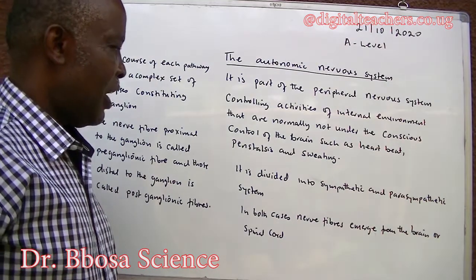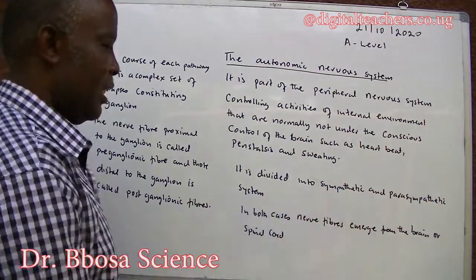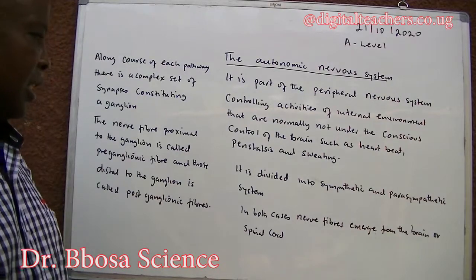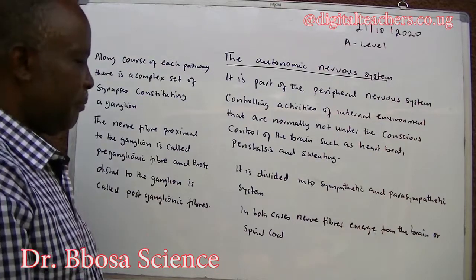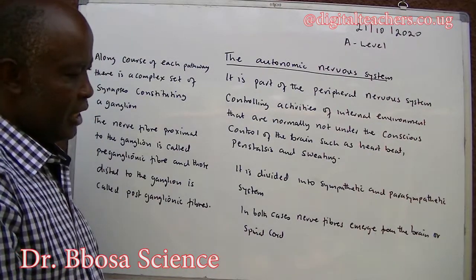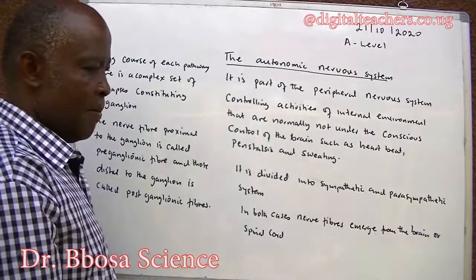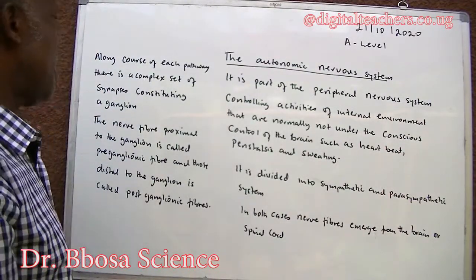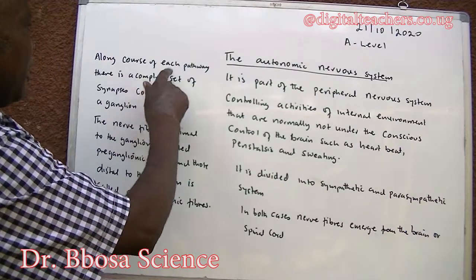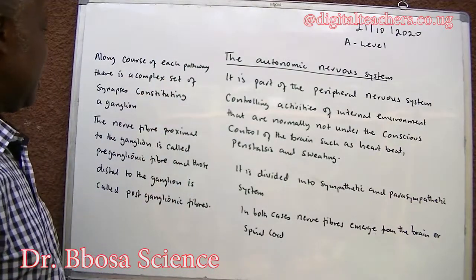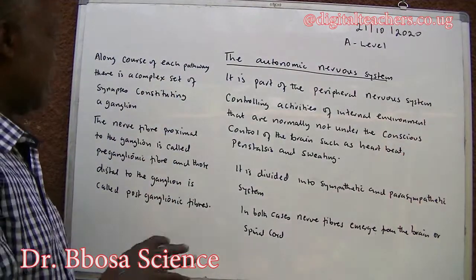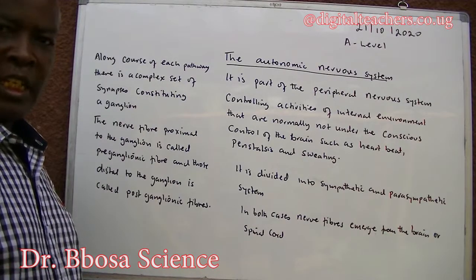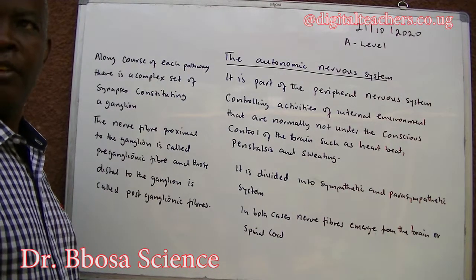It is divided into sympathetic and parasympathetic systems. In both cases, the nerve fibers emerge from the brain or the spinal cord. Along each pathway, there is a complex set of synapses constituting a ganglion.